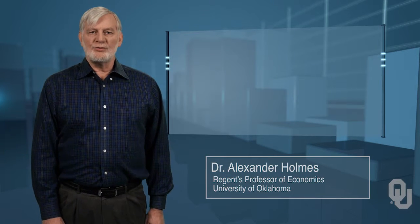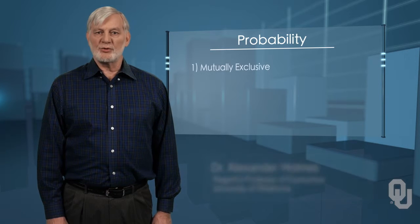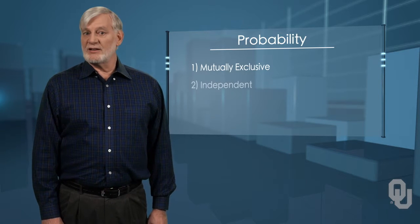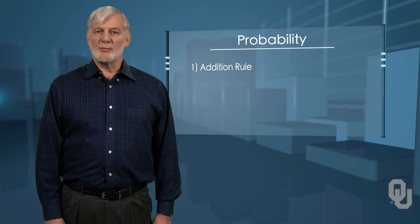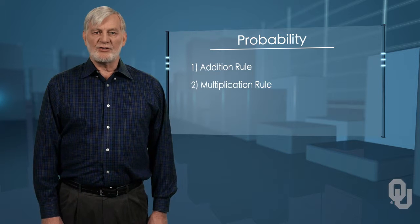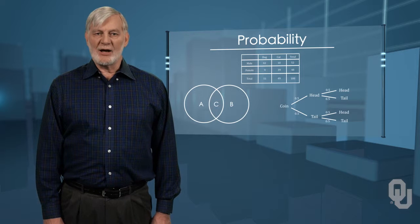By the end of this unit, you will be able to define and use the terminology of probability and determine whether two events are mutually exclusive and if two events are independent. Furthermore, you will be able to calculate probabilities using the addition rule and the multiplication rule and to construct and interpret contingency tables, Venn, and tree diagrams.